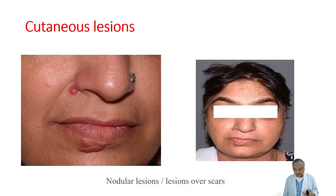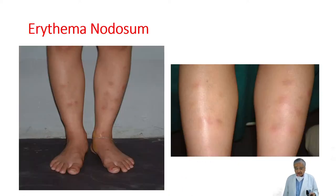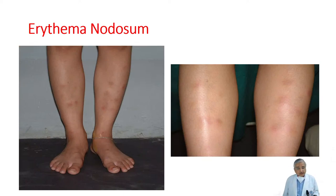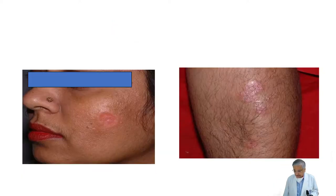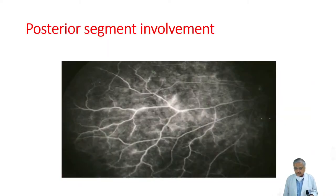These are some skin lesions from our patients — lesions over a scar, and erythema nodosum. One patient is a lawyer; the initial diagnosis was not sarcoid. One is a staff nurse in C2 ward. Unless you look for it, you will miss this. Skin lesions in another patient with scaly lesions — all are part of sarcoid. If you don't examine the patient properly, especially the nape of the neck, you may miss these lesions which on biopsy would suggest sarcoid.